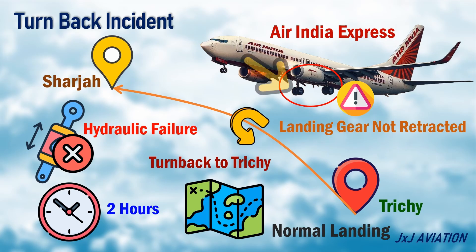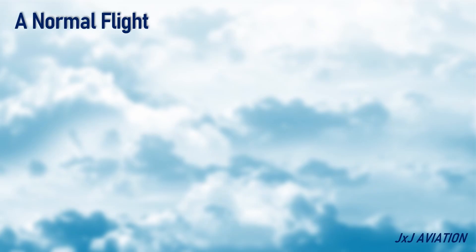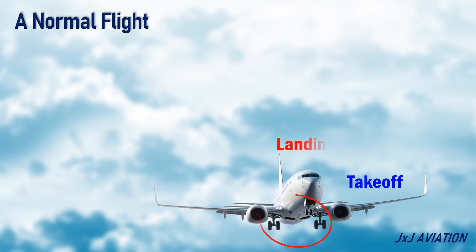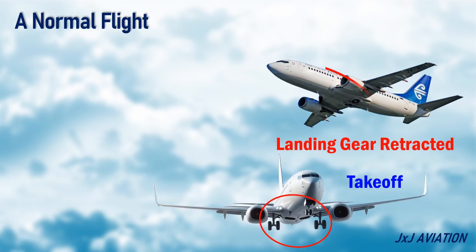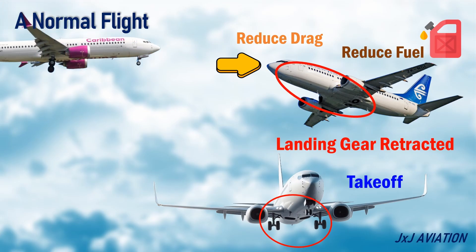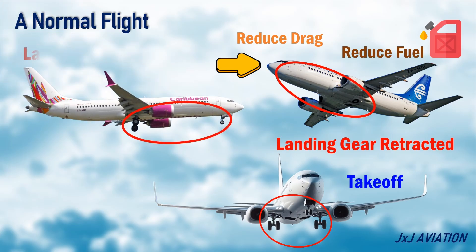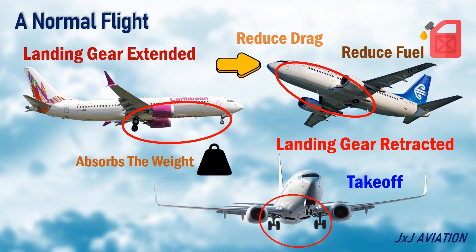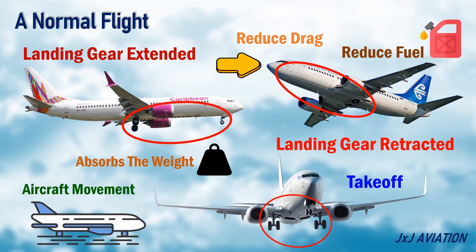Now let's see what happens if the landing gear does not retract after take-off. During a normal flight, after the aircraft takes off, the landing gear is retracted. The landing gear retraction mechanism is provided on aircraft to reduce the drag and thus reduce the fuel consumption. Before reaching the destination, the landing gear is extended and the aircraft lands. The landing gear absorbs the weight of the aircraft during landing and is used for the movement of the aircraft on the ground.